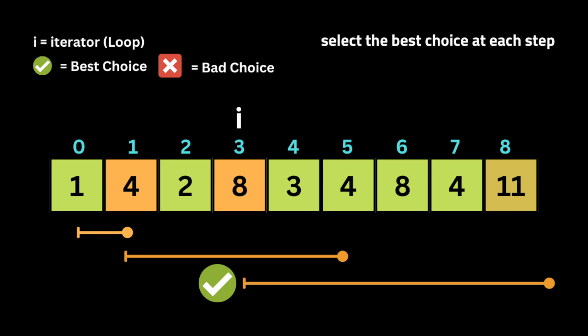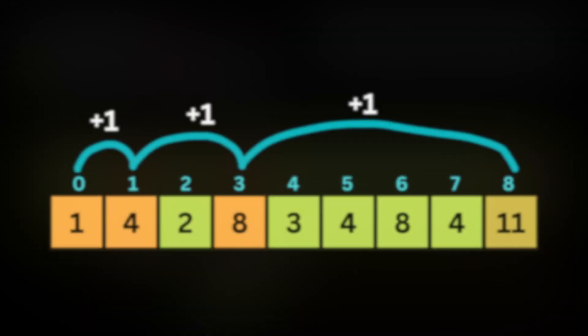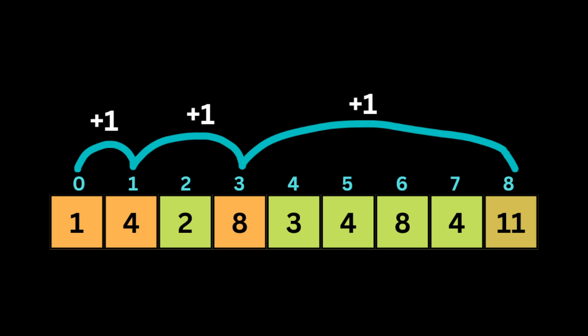The best choice we have is an element with a value of 8, which is at index 3. So we can jump 8 steps and reach the last index with element 11. We don't need to consider the element at index 4 with a value of 3 because it will not help us reach the last index. So here we need 3 jumps to reach the last index, and we return 3 as the result.